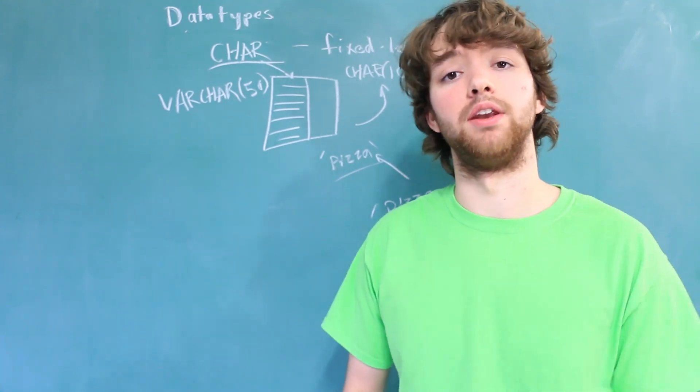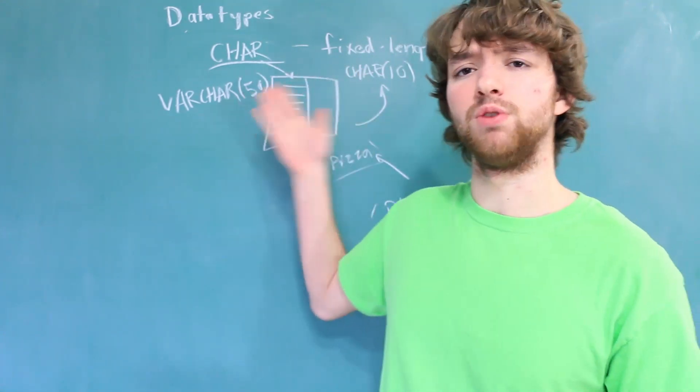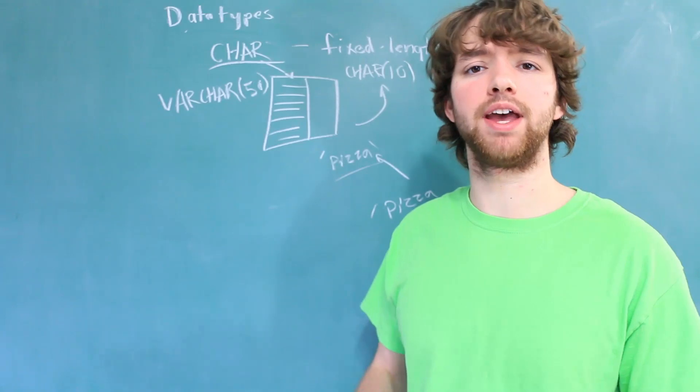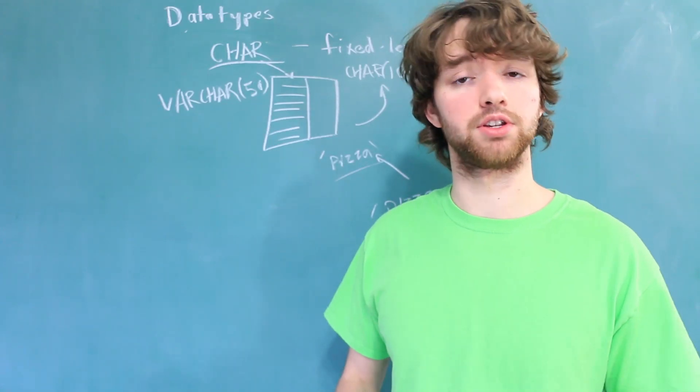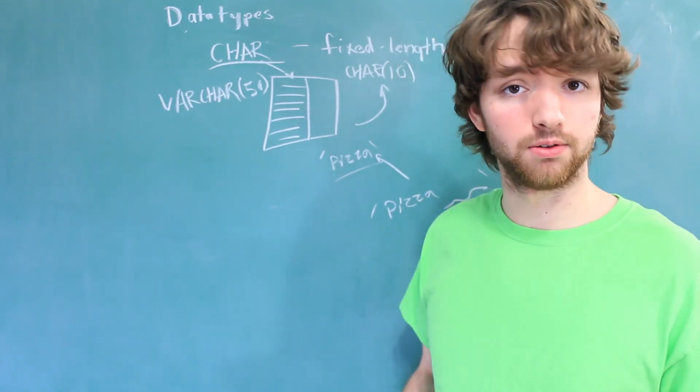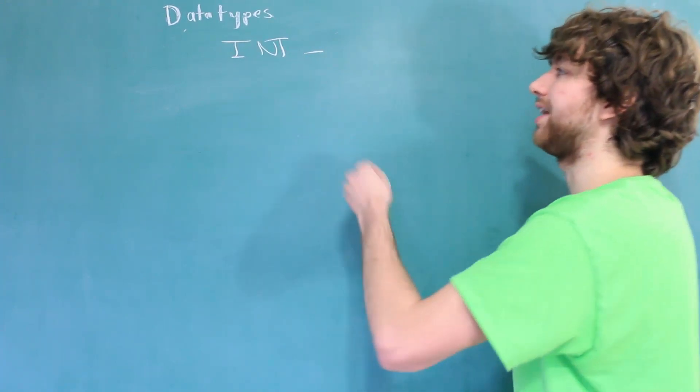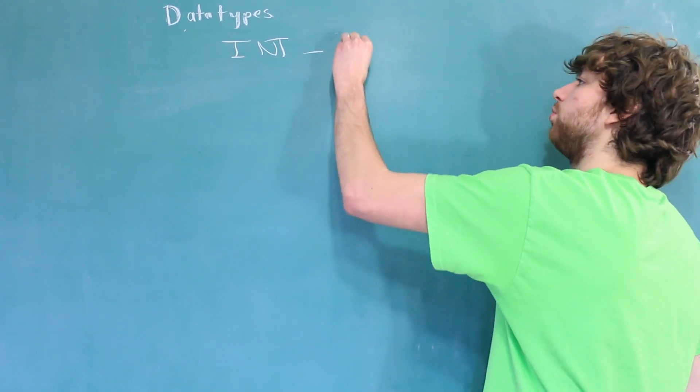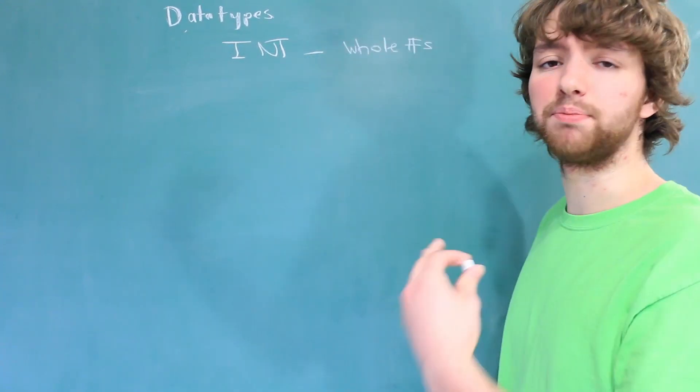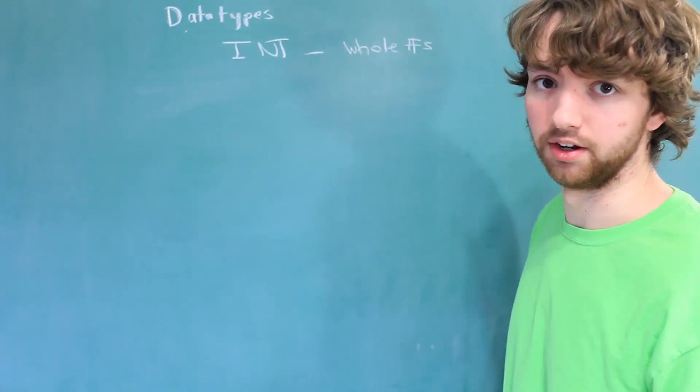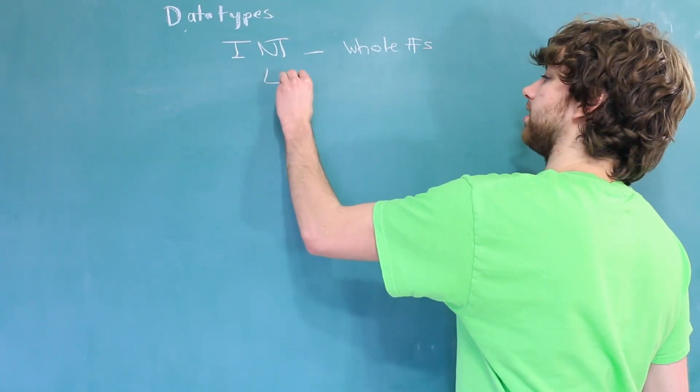But what if you are storing numbers? Well, we don't want to use these character data types. We want to have data types specifically for numbers. So let's talk about those now. The first numeric data type is INT. INT stands for integers, and integers are whole numbers. That means there cannot be a decimal point in fractions of a number. These are often used for IDs.